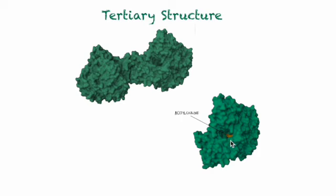Now let's discuss the tertiary structure of the enzyme. It's a globular protein containing a 20-angstrom deep active site. Acetylcholinesterase is a homodimer consisting of two identical protein subunits.